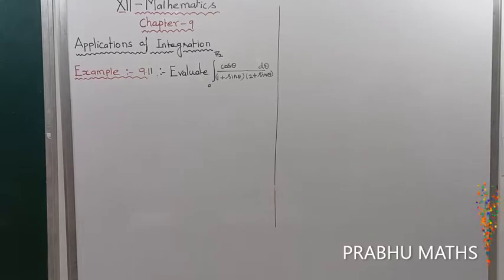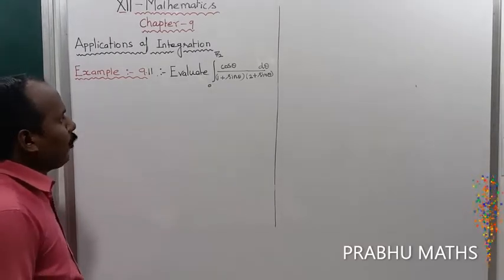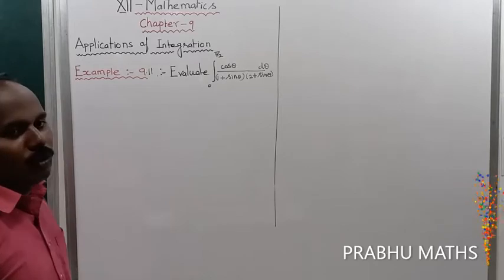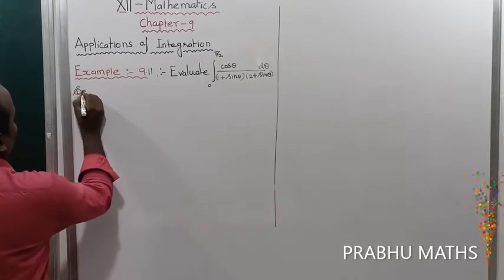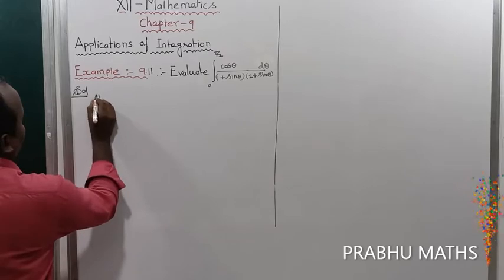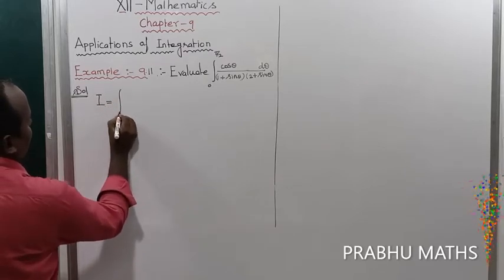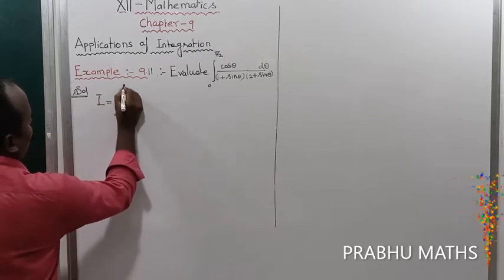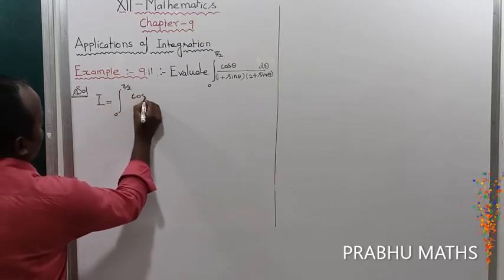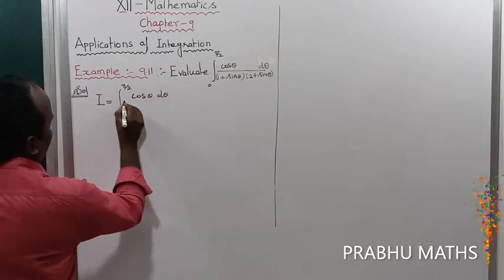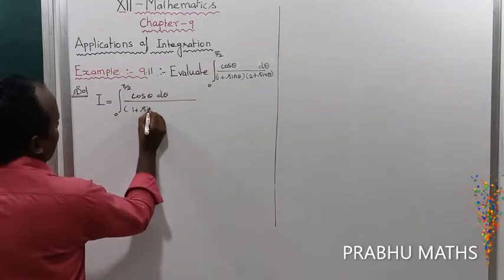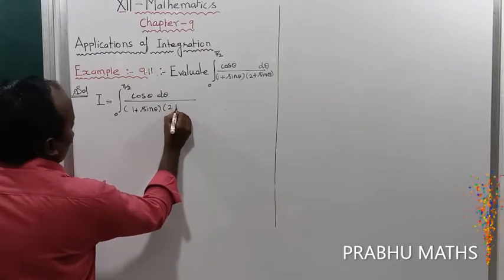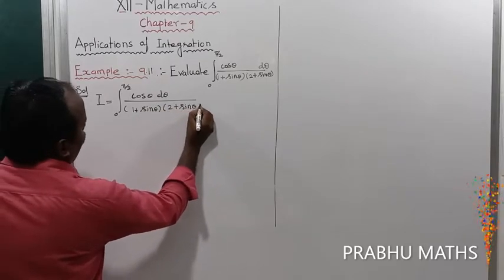Example 9.11: Evaluate the integral from 0 to π/2 of cos θ dθ divided by (1 + sin θ)(2 + sin θ). So first, the given integration — let us consider the integral of 0 to π/2 of cos θ dθ divided by (1 + sin θ)(2 + sin θ).